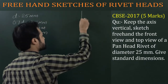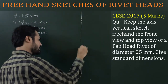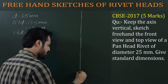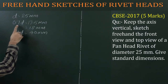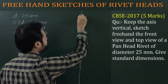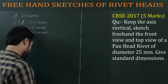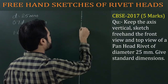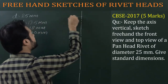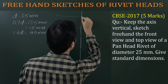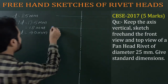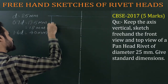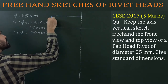The given constraint is that the axis is vertical. First of all, draw a vertical axis. Then, the height of the head is 0.7D, so mark the limits of 0.7D on the axis. These give two points. Now draw lines parallel to each other and perpendicular to the vertical axis, and show the distance 0.7D.